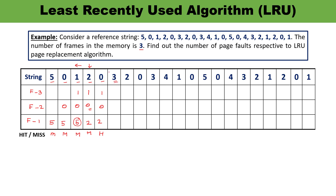Next digit is 3. Looking back before 3: 0 was used, before 0 was 2. So 0 and 2 are recently used, meaning 1 is the least recently used and will be replaced. 3 goes in that position. The frames are now 3, 0, 2 — this is the condition of miss. Next digit is 2. 2 is available in the frame — this is the condition of hit. Nothing will be replaced.